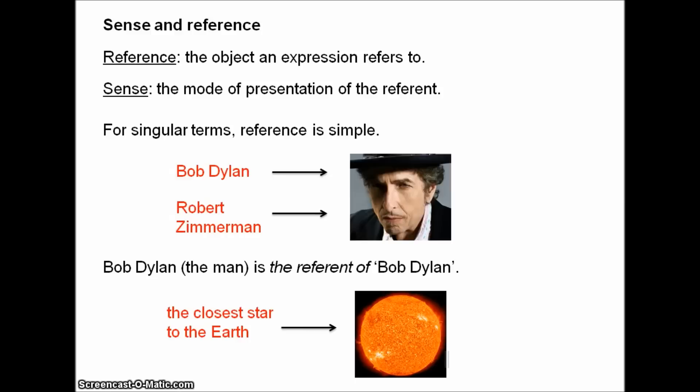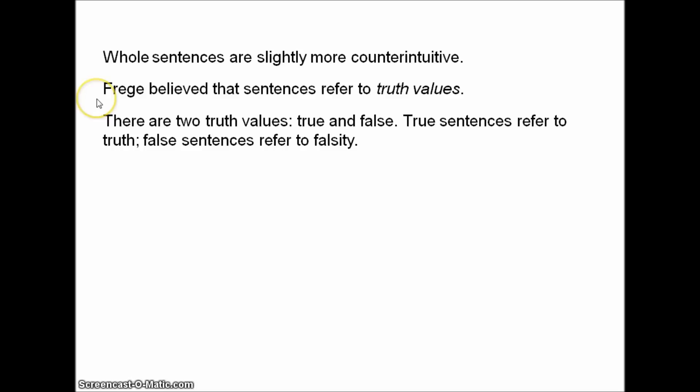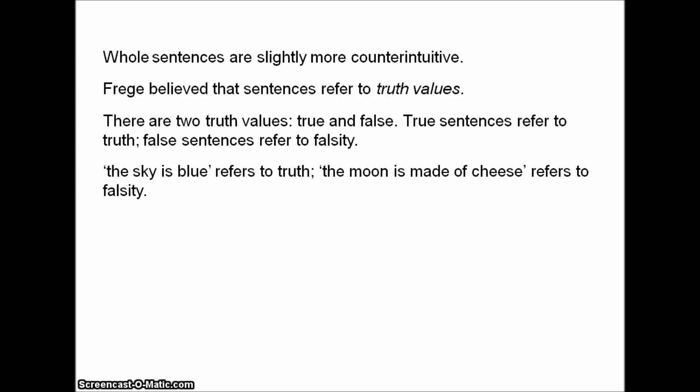Now, whole sentences are somewhat different. Frege believed that sentences refer to truth values, and there are two truth values: true and false. True sentences refer to truth, and false sentences refer to falsity. So 'the sky is blue' refers to truth, and 'the moon is made of cheese' refers to falsity.